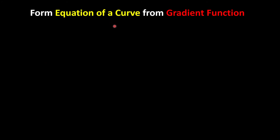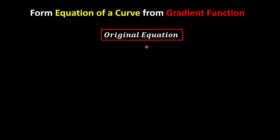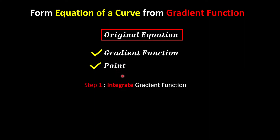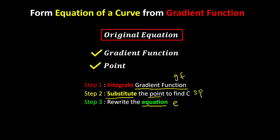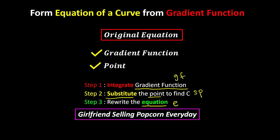Let's recap what we've done. In order to find the original equation, they must give us the gradient functions and one of the points on the curve. Step 1: integrate the gradient functions. Step 2: substitute one of the points on the curve to find c. Step 3: rewrite the equation of the curve. So the three steps are: integrate the gradient function (GF), substitute one of the points given (SP), and form the equations (E) — remember it as 'girlfriend selling popcorn every day.'